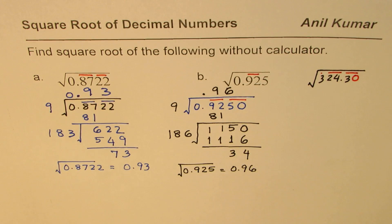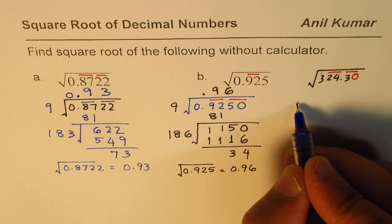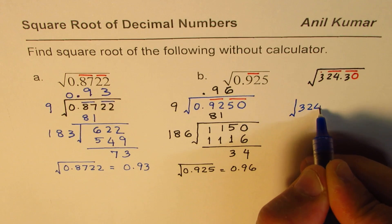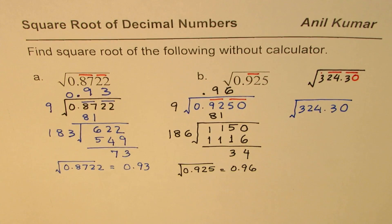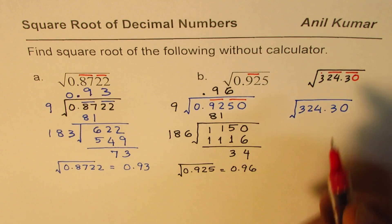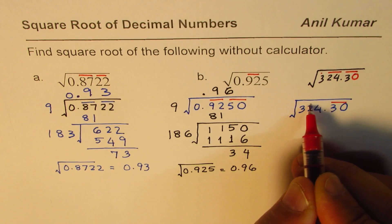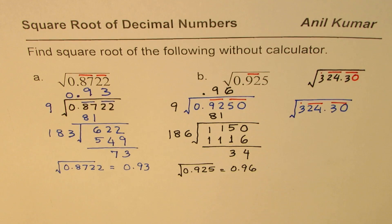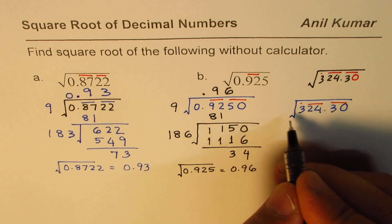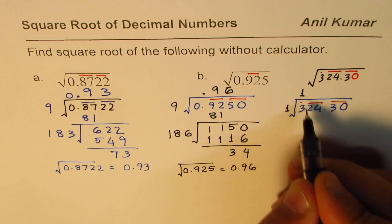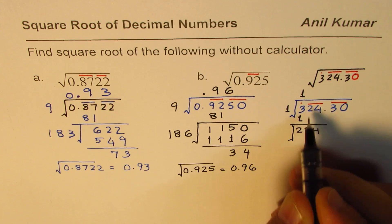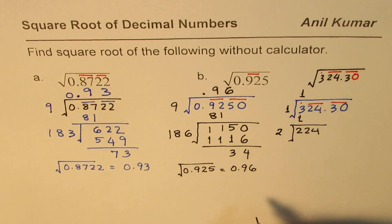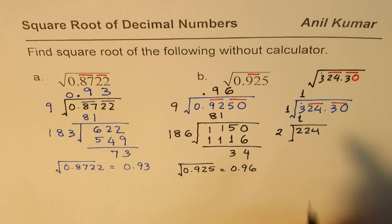Now here is a practice question. We have square root of 324.3. We can always place a zero to make a set of two digits: 324.30. Pairing moves away from the decimal — to the right that's the pair 30, to the left we have 24, and 3 is left alone. The number that goes into 3 is 1; one times one is 1, remainder is 2. Bring down 24 to get 224. Twice 1 is 2, so we put 2 here and find what goes into this.